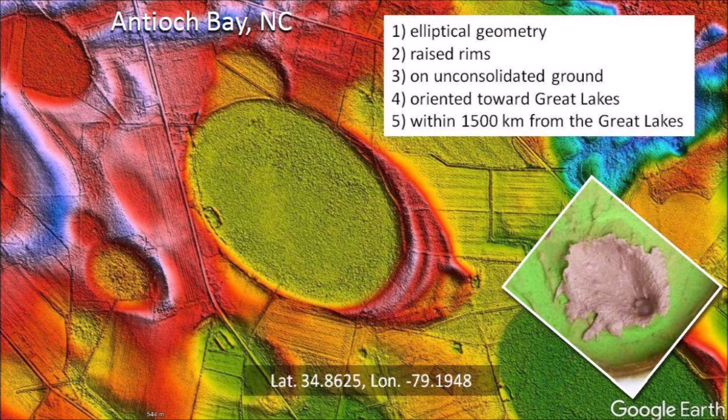The bays are found only on unconsolidated ground that could be liquefied by the ice boulder impacts, and they are oriented from the northwest to the southeast. Extensions of the major axis of the Nebraska Rainwater Basins and the Carolina Bays converge by the Great Lakes. The bays occur within 1,500 kilometers from the Great Lakes, which was the approximate range of the glacier ice boulder impacts. Experimental oblique impacts of ice projectiles on a viscous target produce inclined conical cavities that are elliptical when viewed from above.